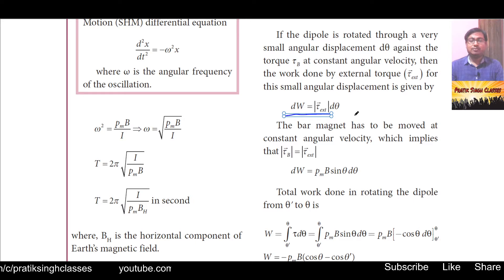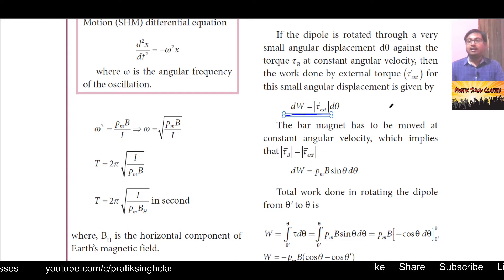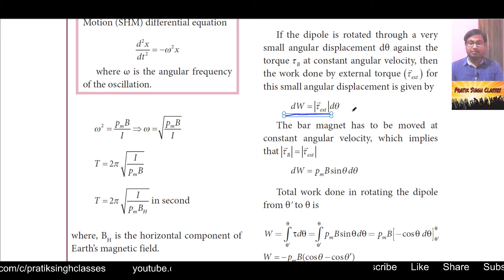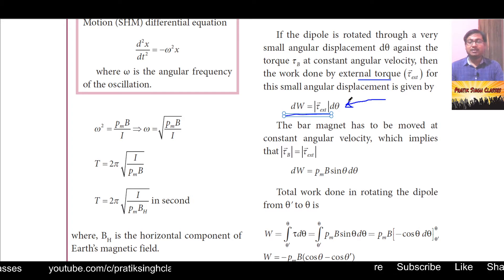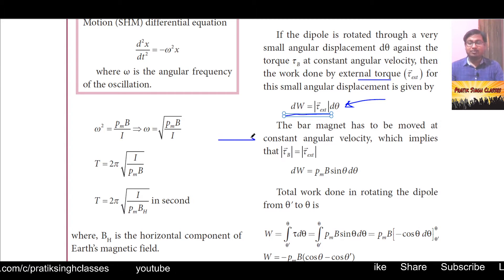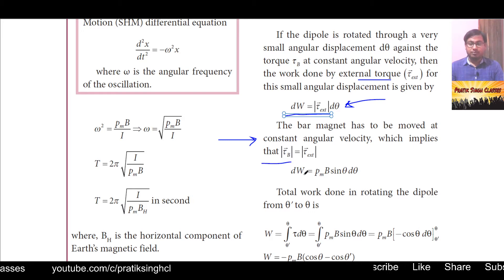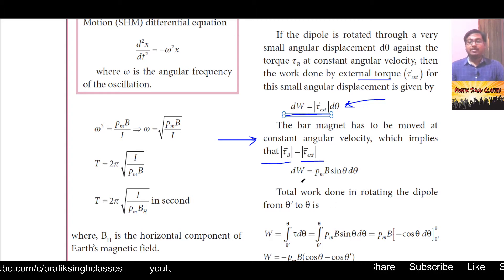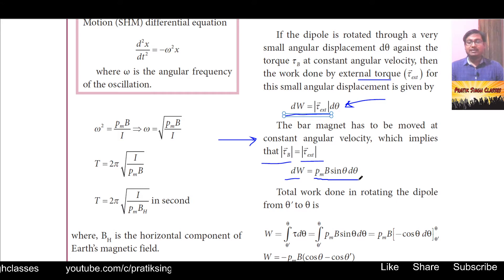Relating linear and angular motion: in linear motion, work done = force × displacement; in angular motion, force is replaced by torque and linear displacement is replaced by angular displacement dθ. Since the bar magnet moves at constant angular velocity, the torque due to the magnetic field equals the external torque. So we write: dW = p_m · B · sin θ · dθ.